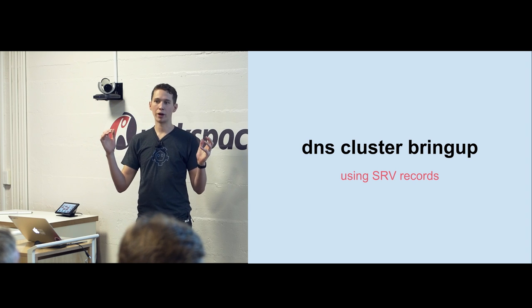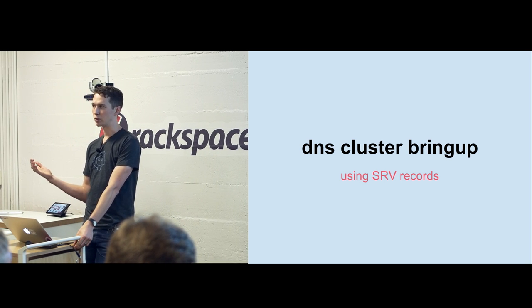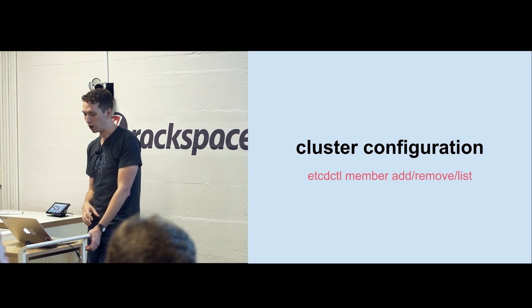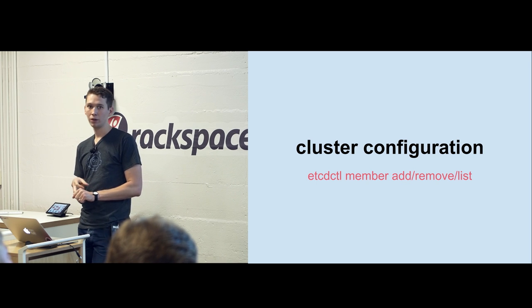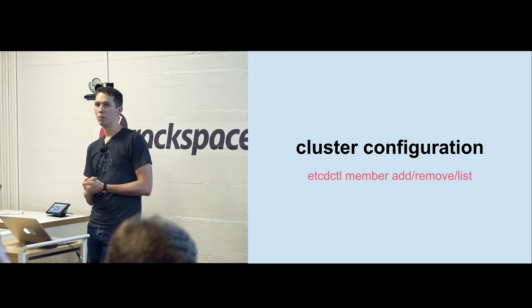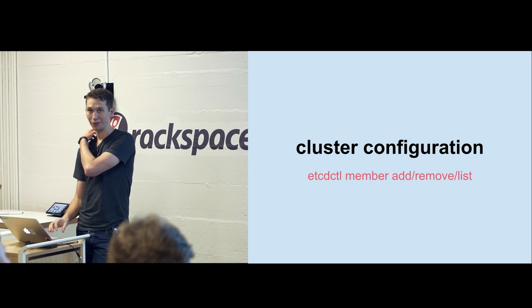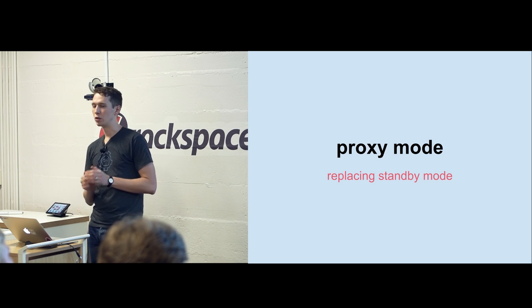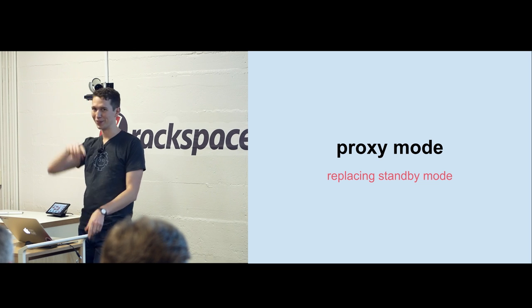We have DNS cluster bring-up — you can set up a SRV record for your DNS cluster and bootstrap off of that, which is really nice if you have control over your DNS. It's another way of bootstrapping besides discovery.etcd.io or manual configuration where you provide all the IPs and ports. We've added cluster configuration tooling — you can add, remove, and list members from etcdctl now. This had been exposed via an API before, but we built tools to make it a lot easier, more explicit, and safer. We've also introduced an explicit proxy mode, replacing standby mode — you can explicitly say 'this machine is a proxy' versus being a full member of the consensus.